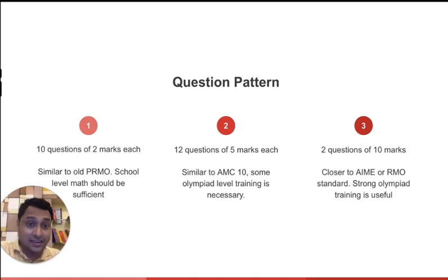But the real competition is in the third section. The third section has two questions and these are 10-pointers. We believe that these problems, these two problems, will be the real differentiating factor. These will be closer to AIME or RMO. AIME is American Invitational Math Examination. And RMO is Regional Math Olympiad that used to happen earlier. Of course, all of these answers to these 24 questions are integer type. So you don't have to write a long-form answer. But difficulty-wise, the last two problems, we expect them to be closer to AIME and RMO. And you will need a sustained long-term game plan to actually be successful in these two problems.